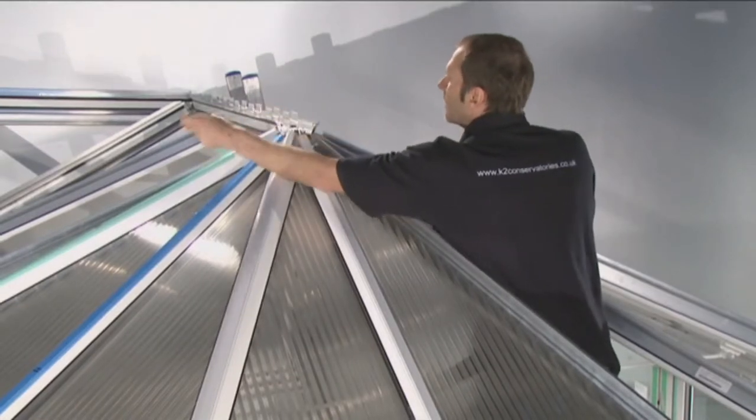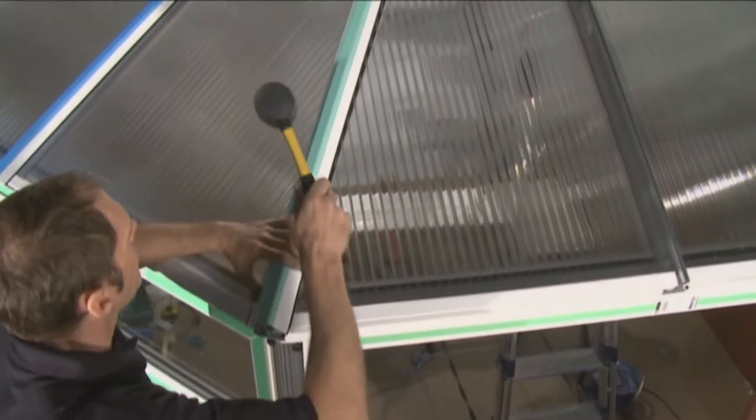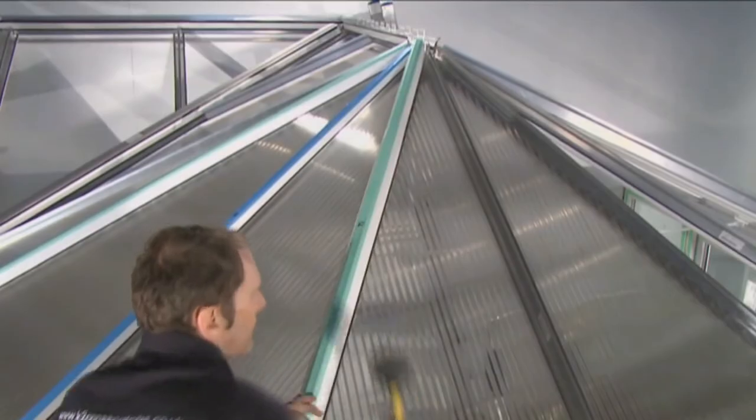Remove the protective film from the glazing bar top cap. Now fit the remainder of the roof glazing sheets and glazing bar caps in the same way as previously described.